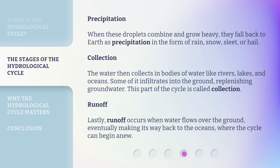Collection. The water then collects in bodies of water like rivers, lakes, and oceans. Some of it infiltrates into the ground, replenishing groundwater. This part of the cycle is called collection. Lastly, runoff occurs when water flows over the ground, eventually making its way back to the oceans, where the cycle can begin anew.